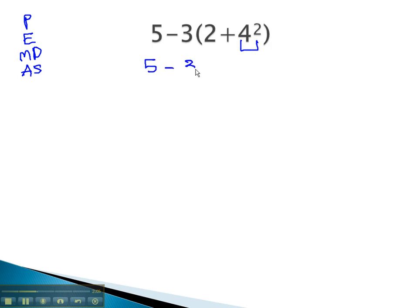So we have 5 minus 3, times 2, plus 4 squared, which is 16. Continuing to work on the parentheses, we have 2 plus 16.